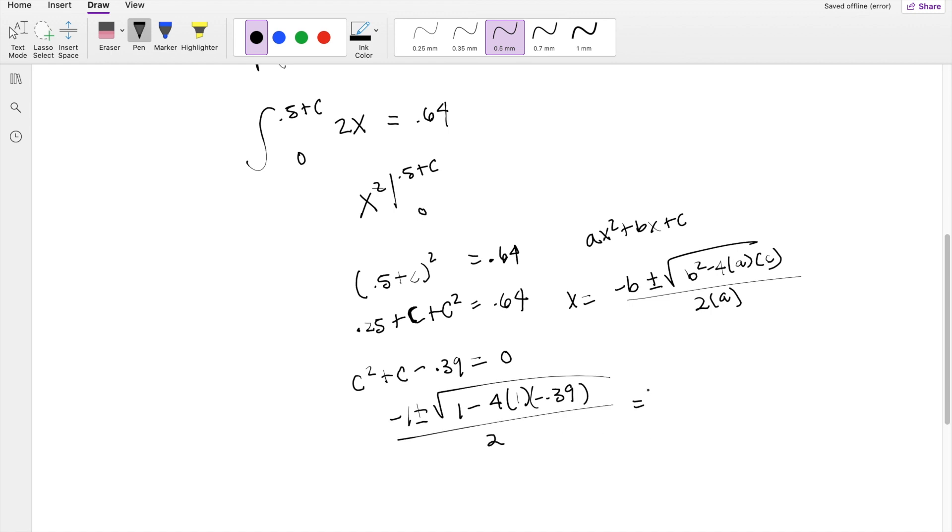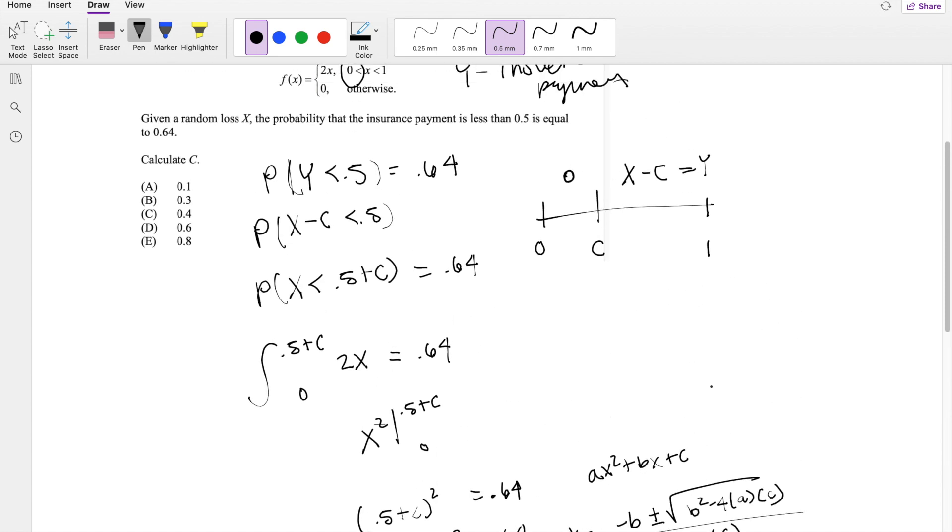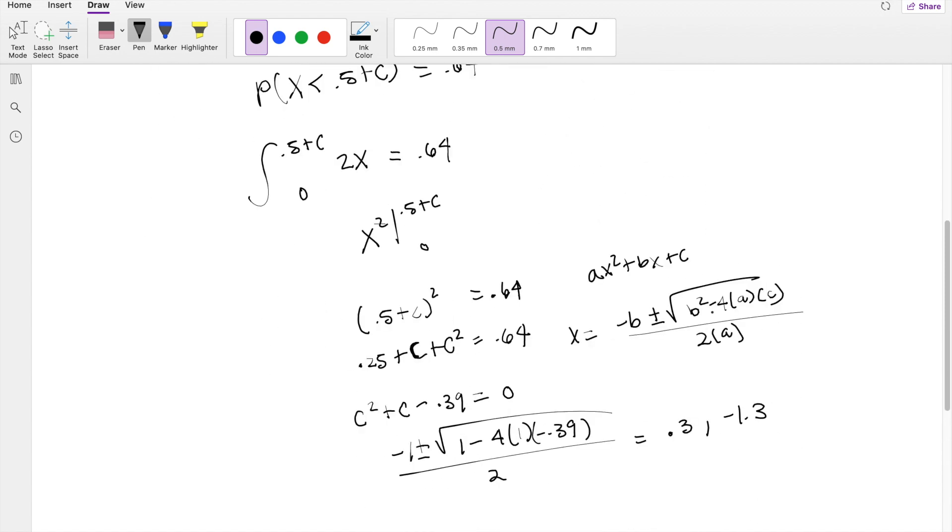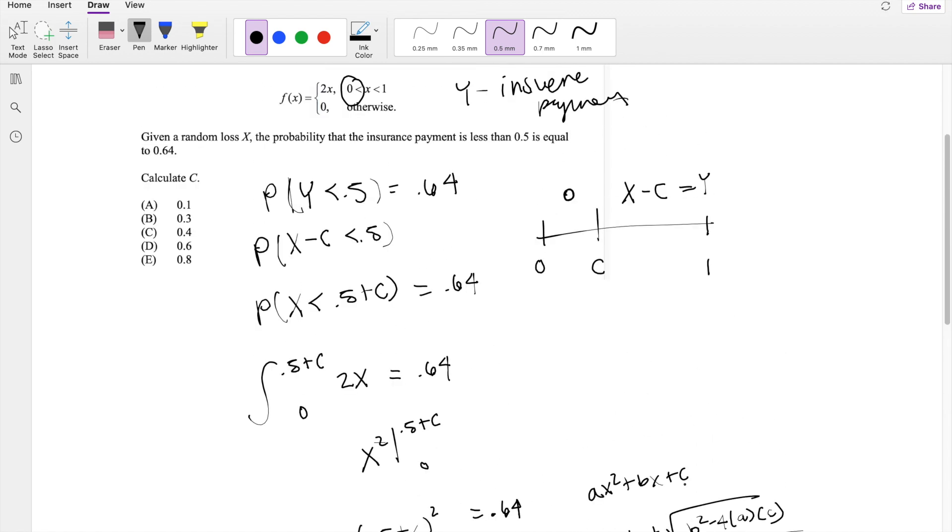Okay, so plugging that into my calculator, my two answers are 0.3 and negative 1.3. And that's because we have two solutions with the plus or minus. But then we know that C has to be between 0 and 1, so we can eliminate the negative answer, leaving us with 0.3, which is our answer B.